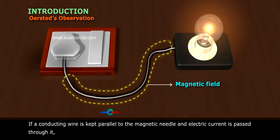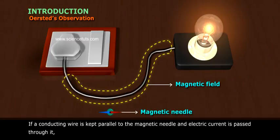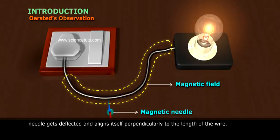If a conducting wire is kept parallel to the magnetic needle, an electric current is passed through it, needle gets deflected and aligns itself perpendicularly to the length of the wire.